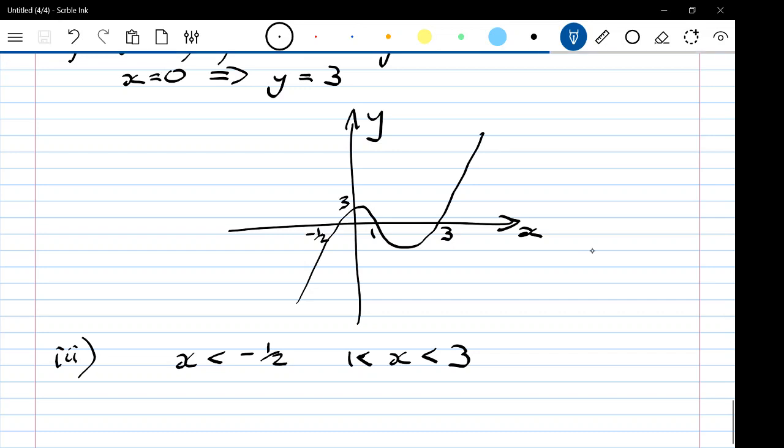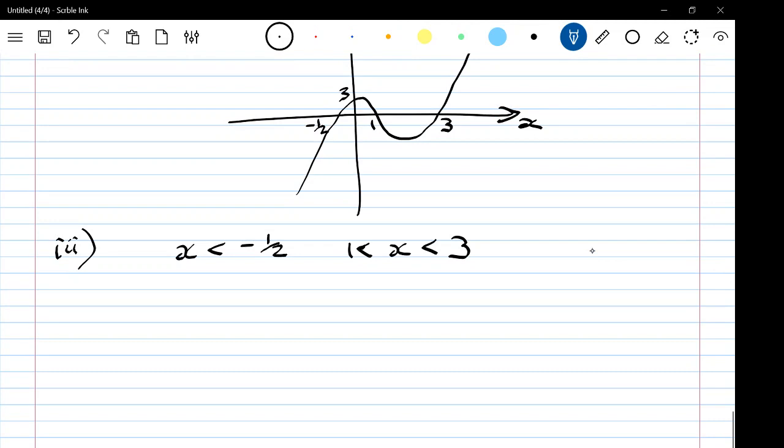So in terms of putting it into set notation, this is the bit that we don't really like. Those two things can't happen at the same time. Because you can't be both less than minus a half and between 1 and 3 at the same time. So it's not an intersect, is it? They're not both happening at once. It's an and thing. It's a union thing. Because both of those things are the conditions for f of x to be negative.